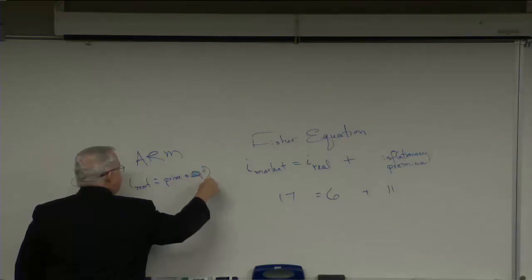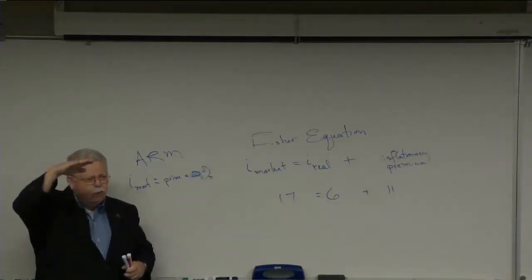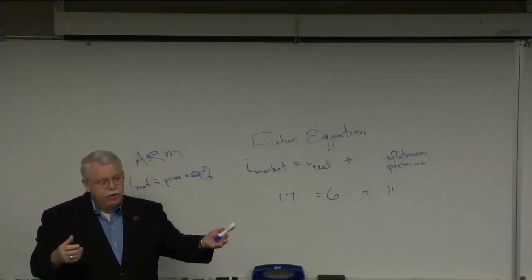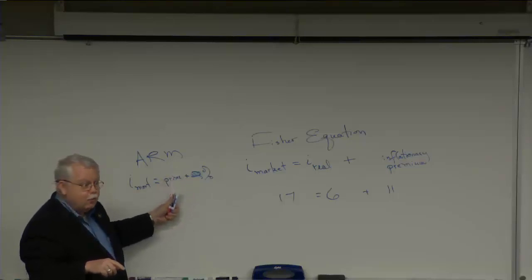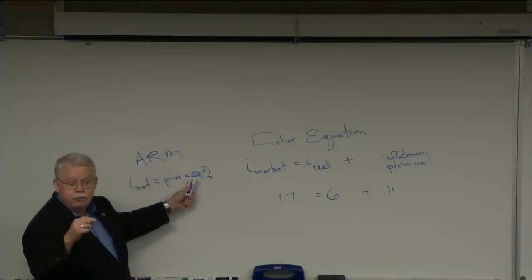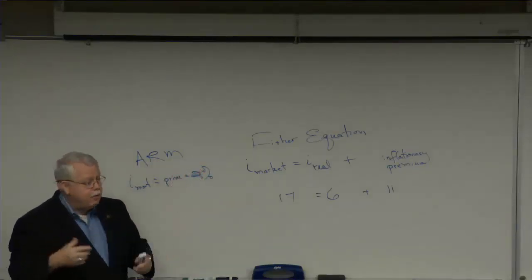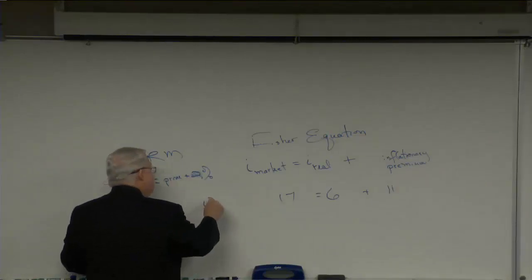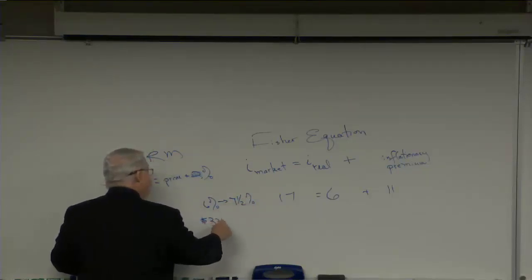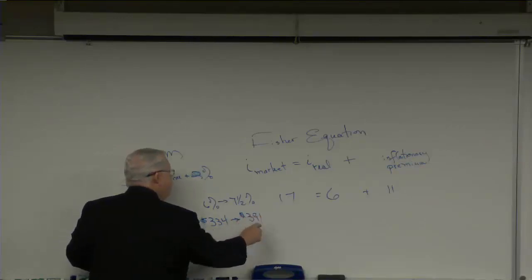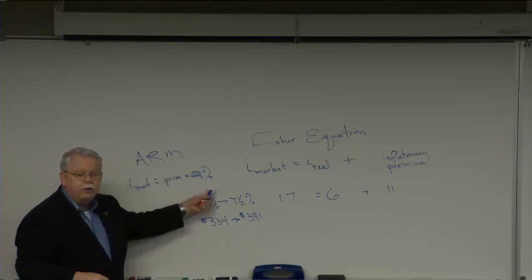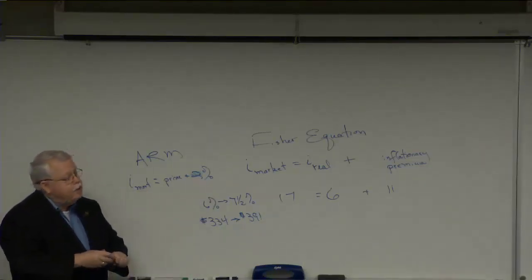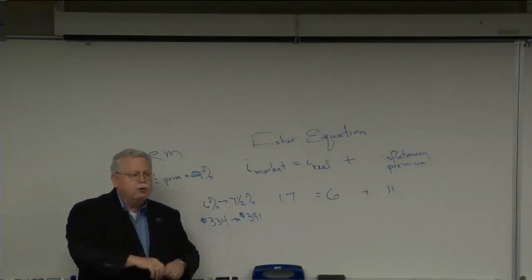The adjustable rate mortgage said the rate on your mortgage will be the prime rate plus, I don't know, two percent. The prime rate is the rate that the very richest people pay when they borrow from the very best banks. That's the lowest rate anybody's going to get, but it fluctuates with the market. So as rates in the market went up, your mortgage rate, which was 2 percent above that, also rose. So if you had a mortgage today at 6 percent, it might be that next year your mortgage rate would be at 7.5 percent and your payment would go from $334 to $391. You didn't know what your mortgage payment was going to be each year. It would vary with the interest rate, and that's how the lenders were protecting themselves from inflation.